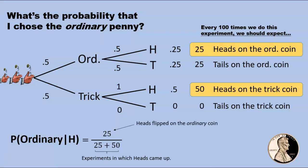And if you do the arithmetic, you find that the probability we seek is 1 in 3. Thus, after having flipped one head, the probability that we drew the ordinary coin drops from 50 percent to 33 percent.